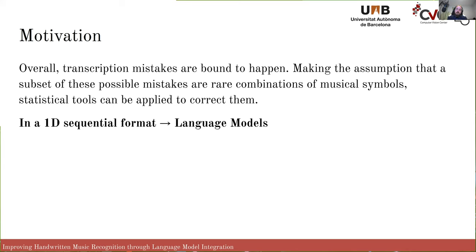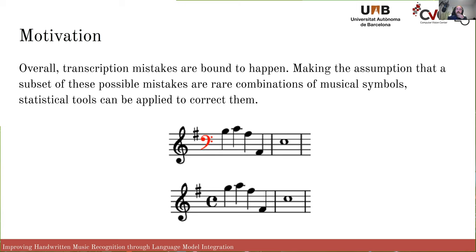Since we are using 1D sequential output, we're basically going to use the same approach as we would for regular English written language. The kind of mistake we would aim to correct is the following: it wouldn't make much sense to have two clefs right next to each other, however given the shape of the symbol, it's possible that our model has confused it with a C time signature. We assume the correct symbol appears within the most likely outputs from each classification step.